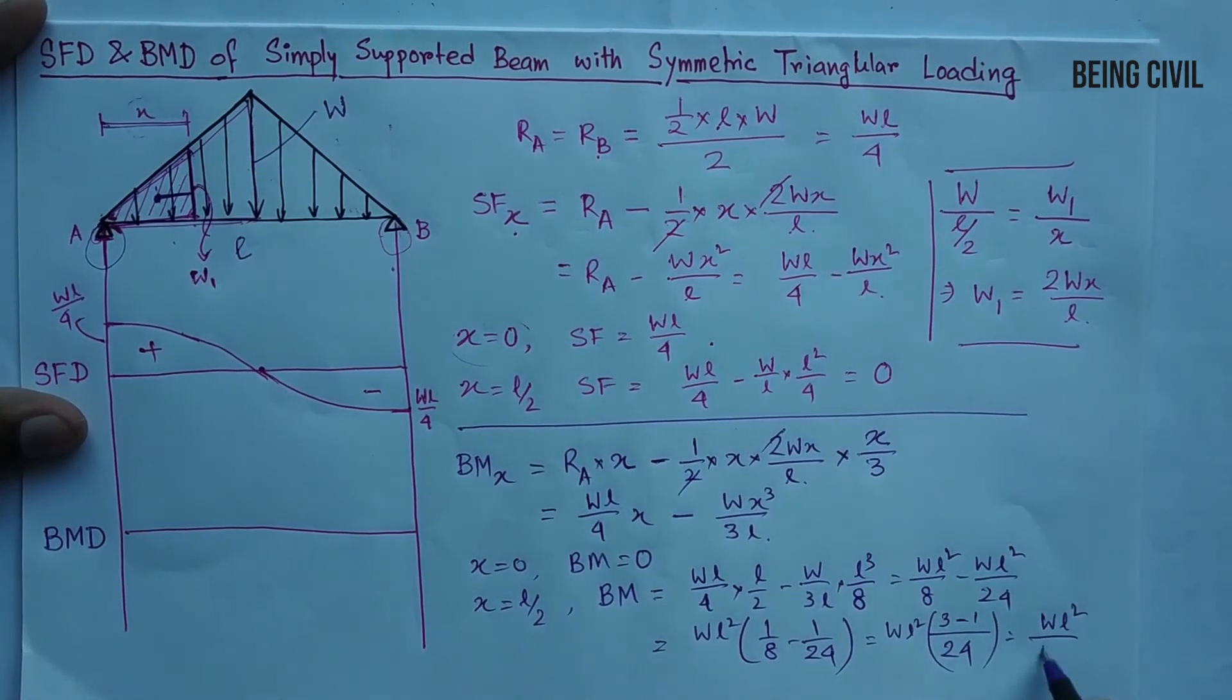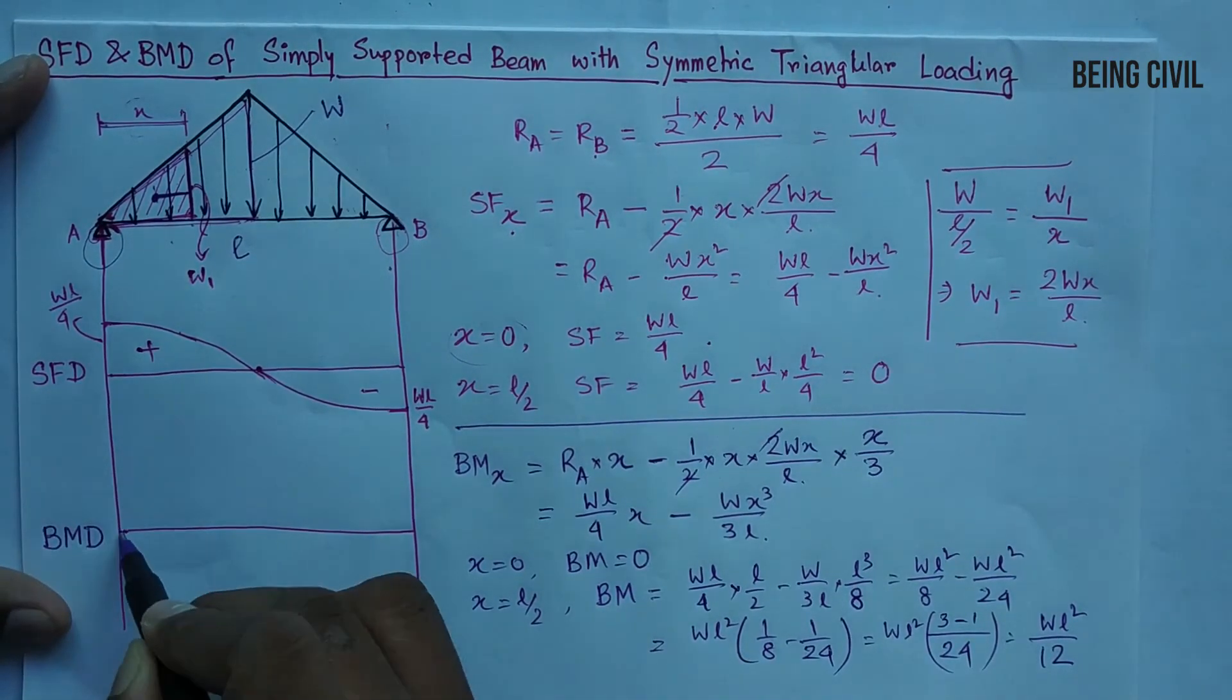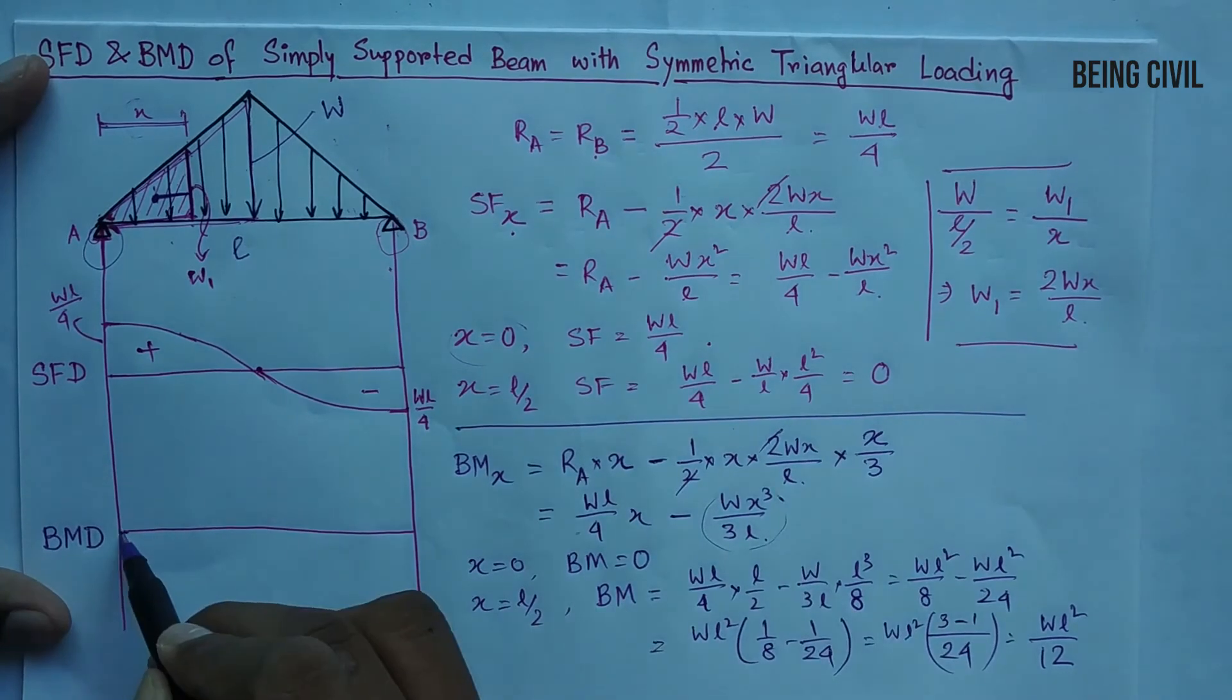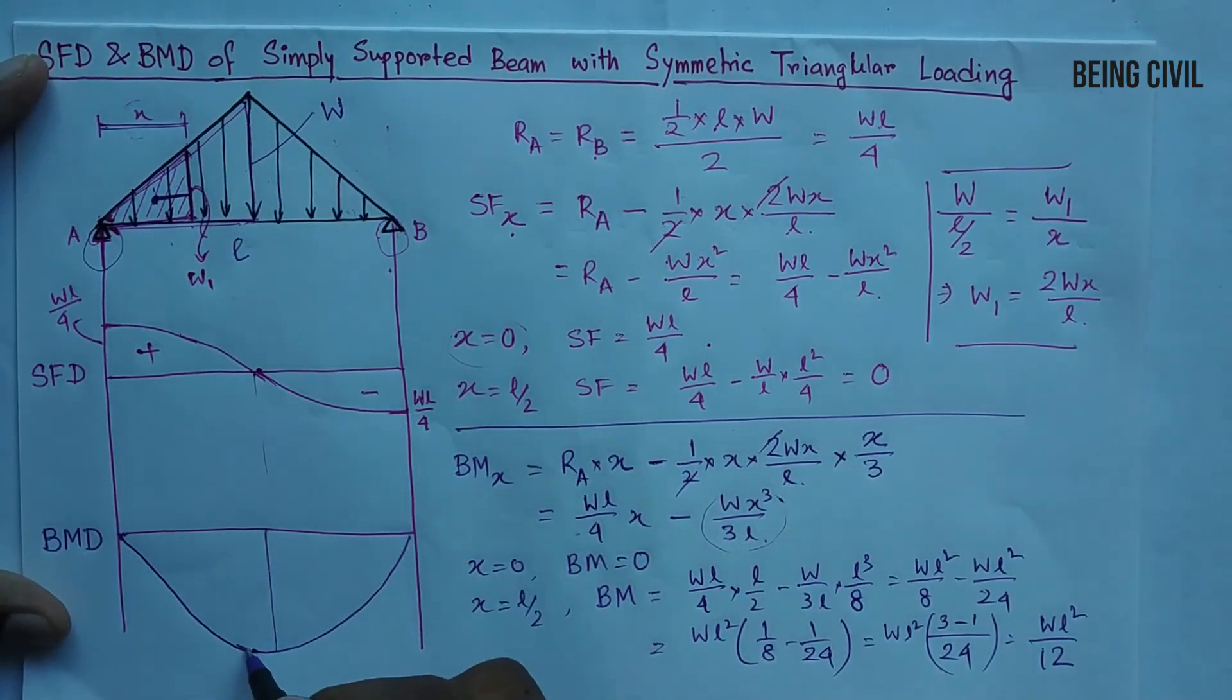Which is WL square by 12. You see this is a cubic bending moment equation, the sign will be positive and it is a cubic curve. So the bending moment diagram will be like this, maximum at midpoint is positive and the value is WL square by 12.